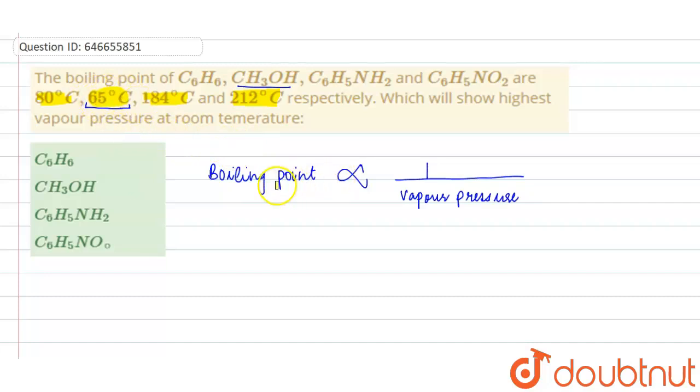And we have inverse relation between boiling point and vapor pressure, so our answer will be option B, CH3OH. So CH3OH will have highest vapor pressure.